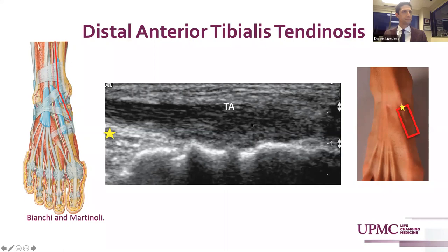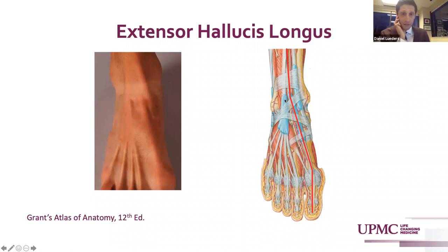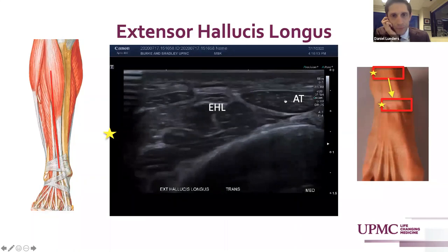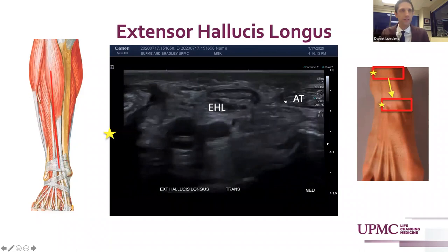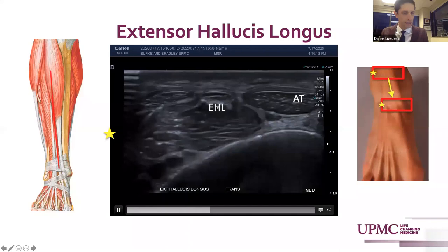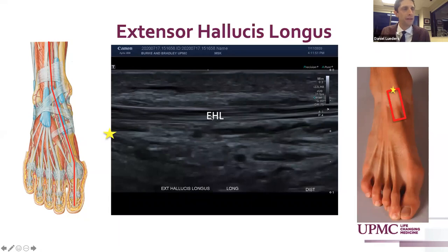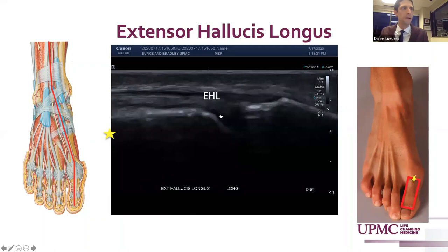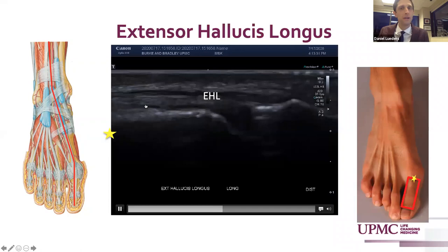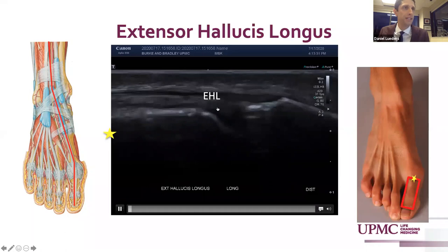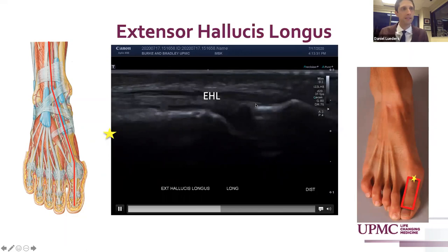Moving laterally across the anterior ankle in the extensor compartment, the extensor hallucis longus lies between the tibialis anterior and the extensor digitorum longus tendon at the anterior ankle. It has a relatively thin tendon compared to the anterior tibialis and extensor digitorum laterally. It maintains that distinct flattened ovoid structure as it courses over the dorsal medial foot. In long axis it maintains a distinct laminar appearing hyperechoic tendon, which can be traced all the way distally to its first toe distal phalanx insertion and dynamically assessed with great toe extension and flexion.